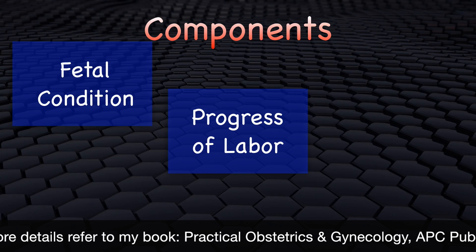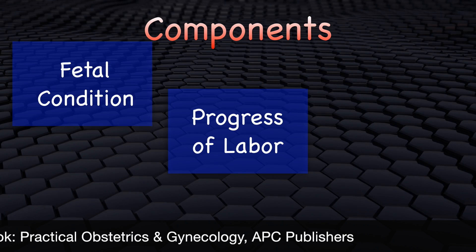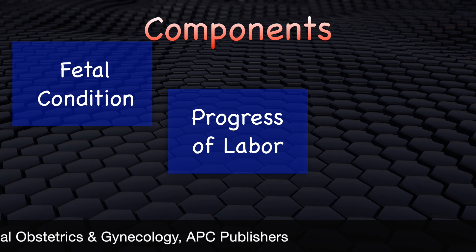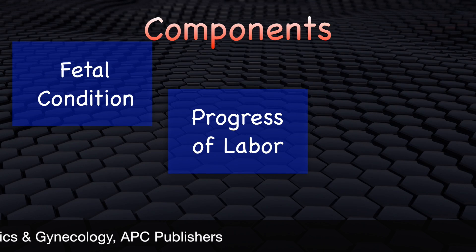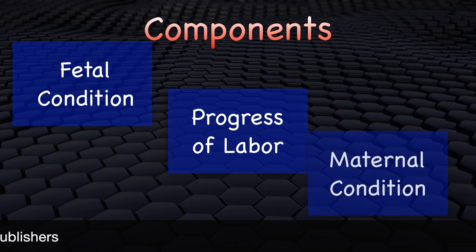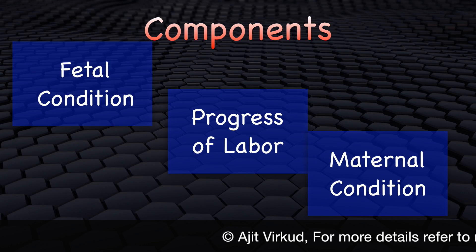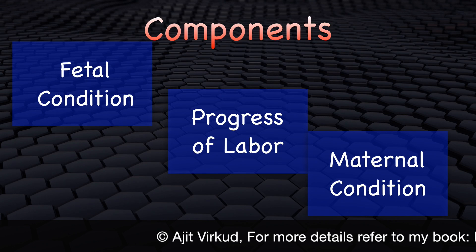The progress of labour is represented in the middle. It comprises cervical dilatation, descent of the fetal head, and uterine contractions — their duration and frequency per 10 minutes. The third component is maternal condition, shown at the bottom. It comprises pulse, blood pressure, temperature, and urine — that is its volume and the presence or absence of albumin or acetone.